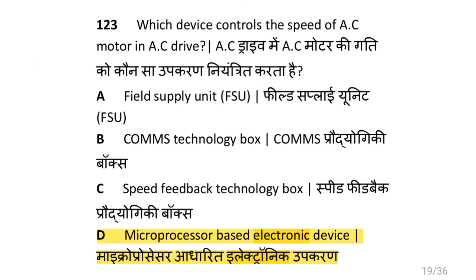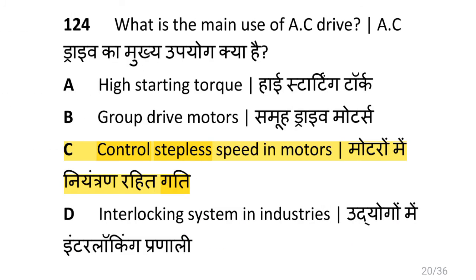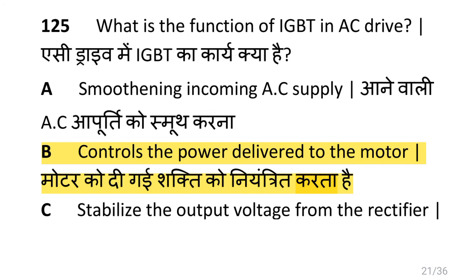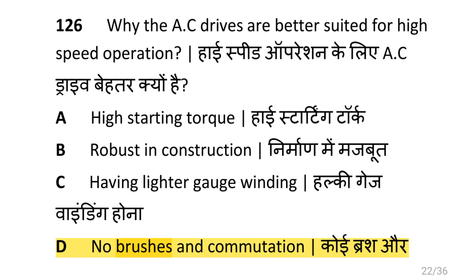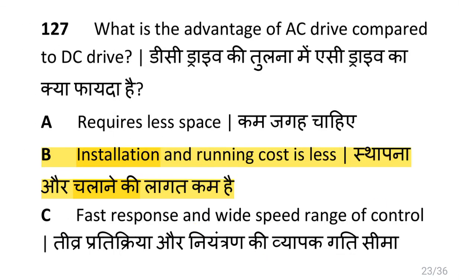Which device controls the speed of AC motor in AC drives? That is a microprocessor based electronic device. What is the main use of AC drives? That is to control stepless speed in motors. What is the function of IGBT in AC drives? That is to control the power delivered to the motor. Why are AC drives better suited for high speed operation? That is no brushes and no commutations. What is the advantage of AC drives compared to DC drives? That is installation and running cost is less.